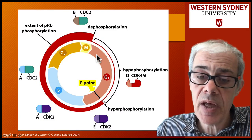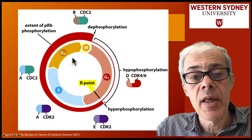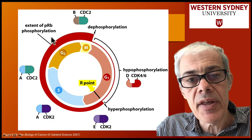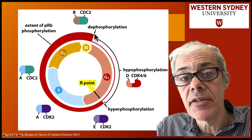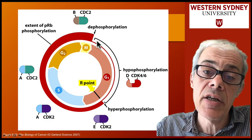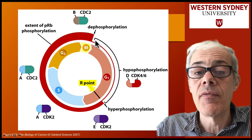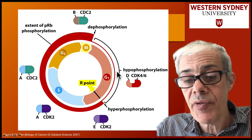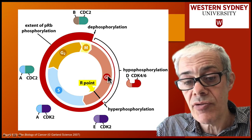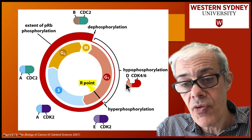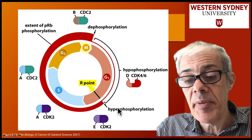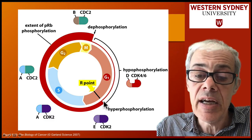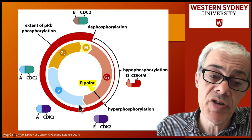Here's a diagram showing that. Here's our cell cycle, here's our restriction point, and on the outside we're looking at the phosphorylation status of retinoblastoma. In early G1, retinoblastoma is not phosphorylated. It becomes hypophosphorylated as you progress through G1, and then through the action of these cyclin-dependent kinases, it becomes hyperphosphorylated. This allows cells to pass the restriction point.